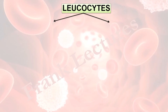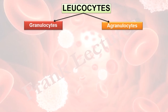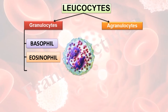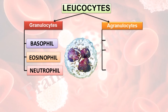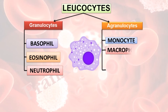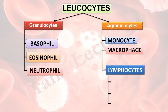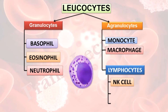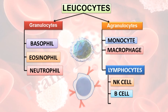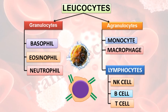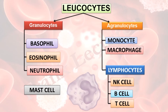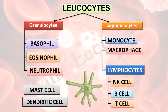To summarize: leukocytes are of two types — granulocytes and agranulocytes. Granulocytes are further of three types: basophils, eosinophils, and neutrophils. Agranulocytes are of two types: monocytes, which develop and mature into macrophages when they migrate into tissues; and lymphocytes, which are further divided into large and small lymphocytes. Large lymphocytes include NK cells; small lymphocytes include B cells and T cells. We also studied mast cells, similar in function and appearance to basophils, and dendritic cells, whose characteristic feature is their star-shaped morphology.